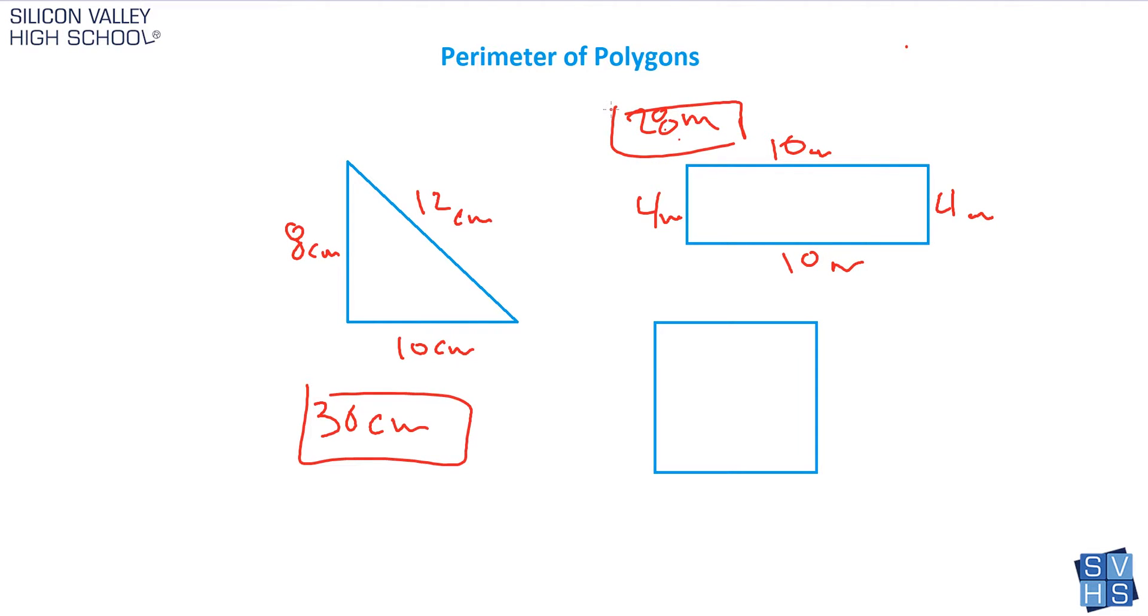Let's say they tell us this is a square. Maybe they only give us one side. You're thinking, oh no, I don't know the other sides. Well, remember, for a square every single side is the same. So 6, 6, 6, 6—this perimeter would be 24.